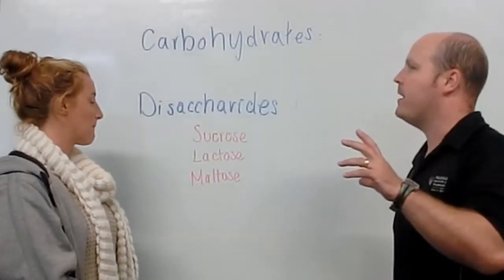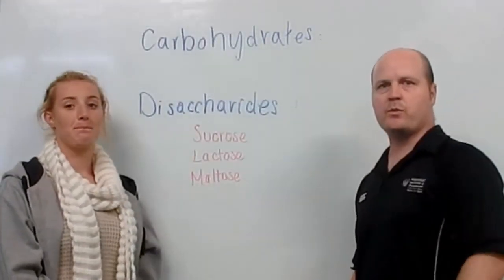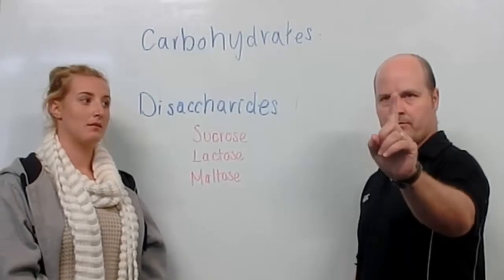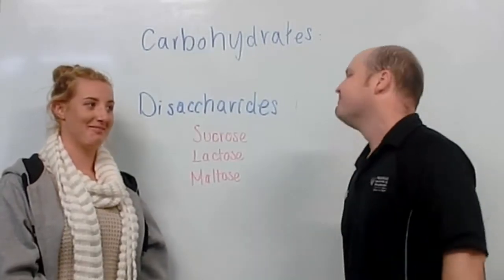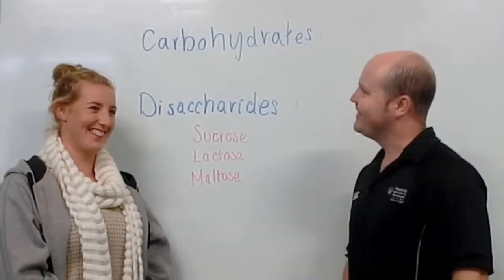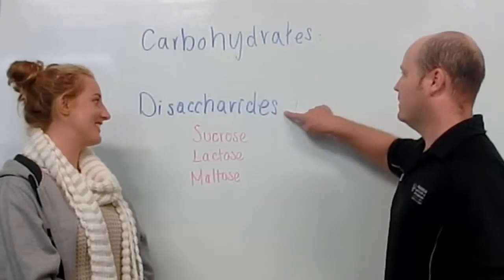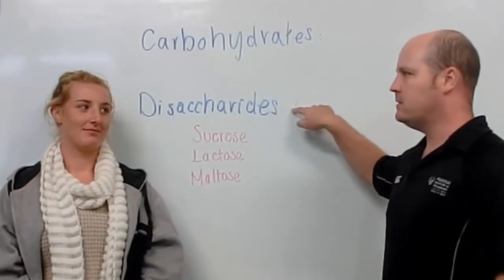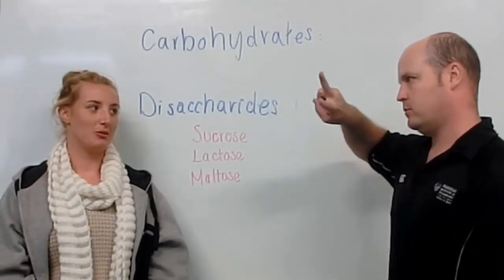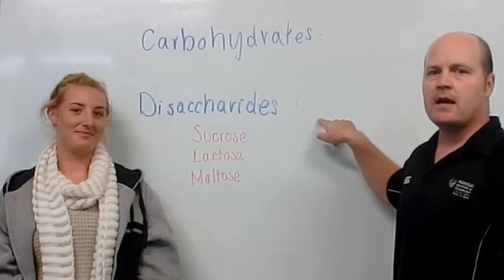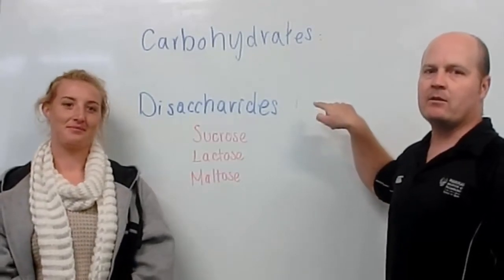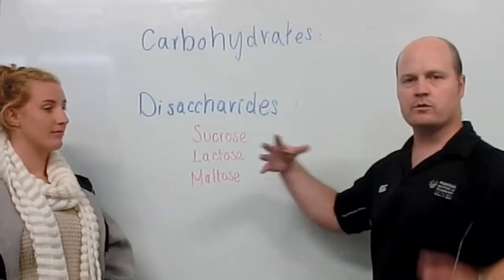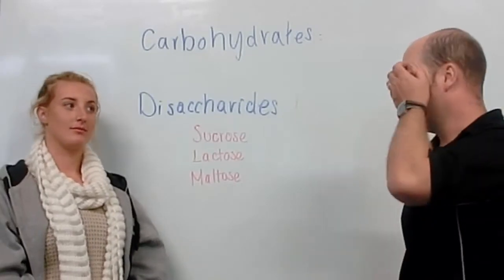So we came from our monosaccharides, which were one sugar molecule. And now we move on to our disaccharides. So di means two. So these are made of two to ten sugar molecules combined together.